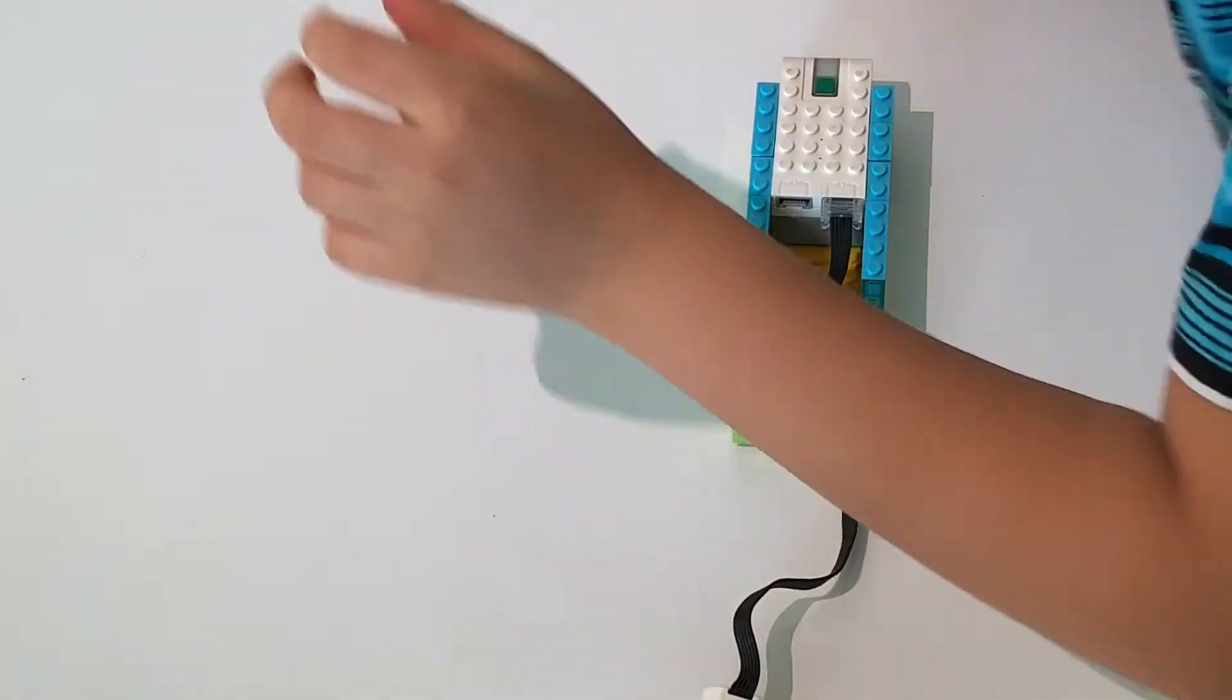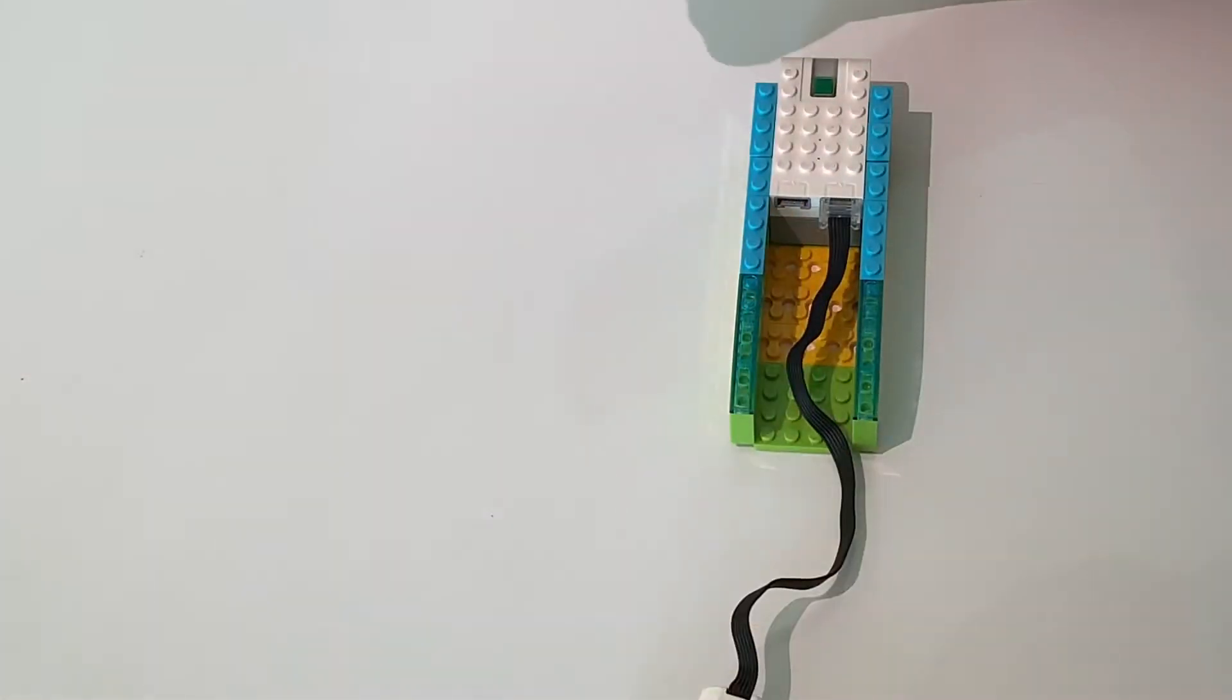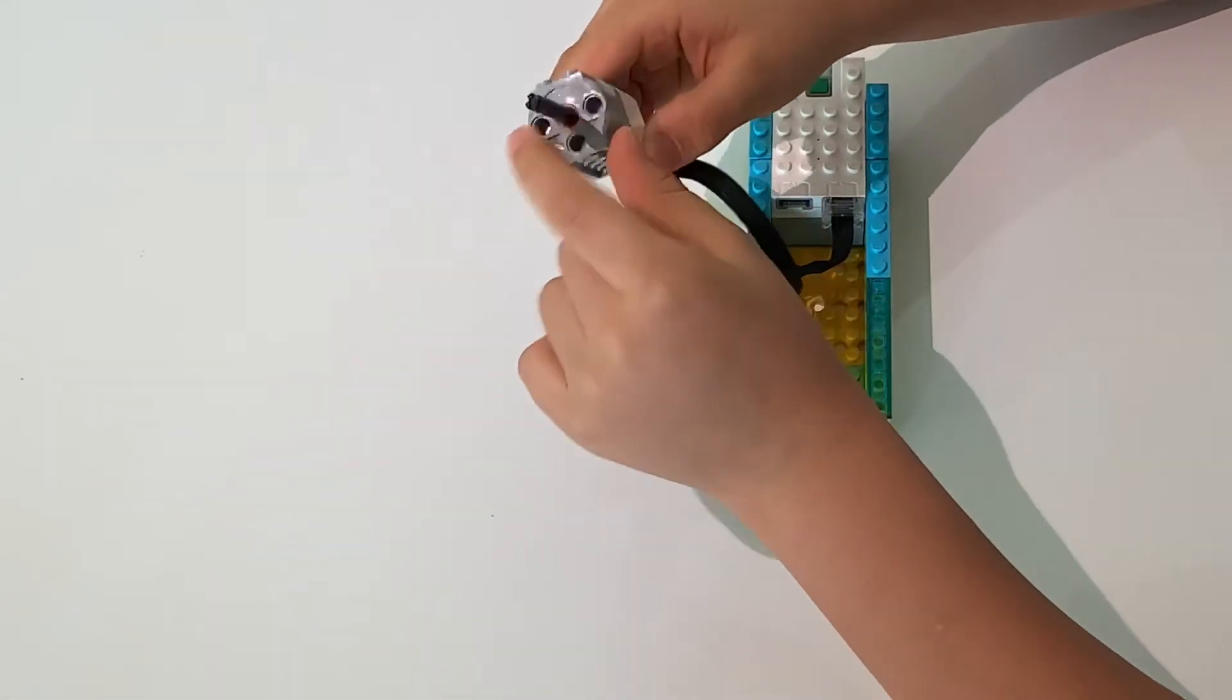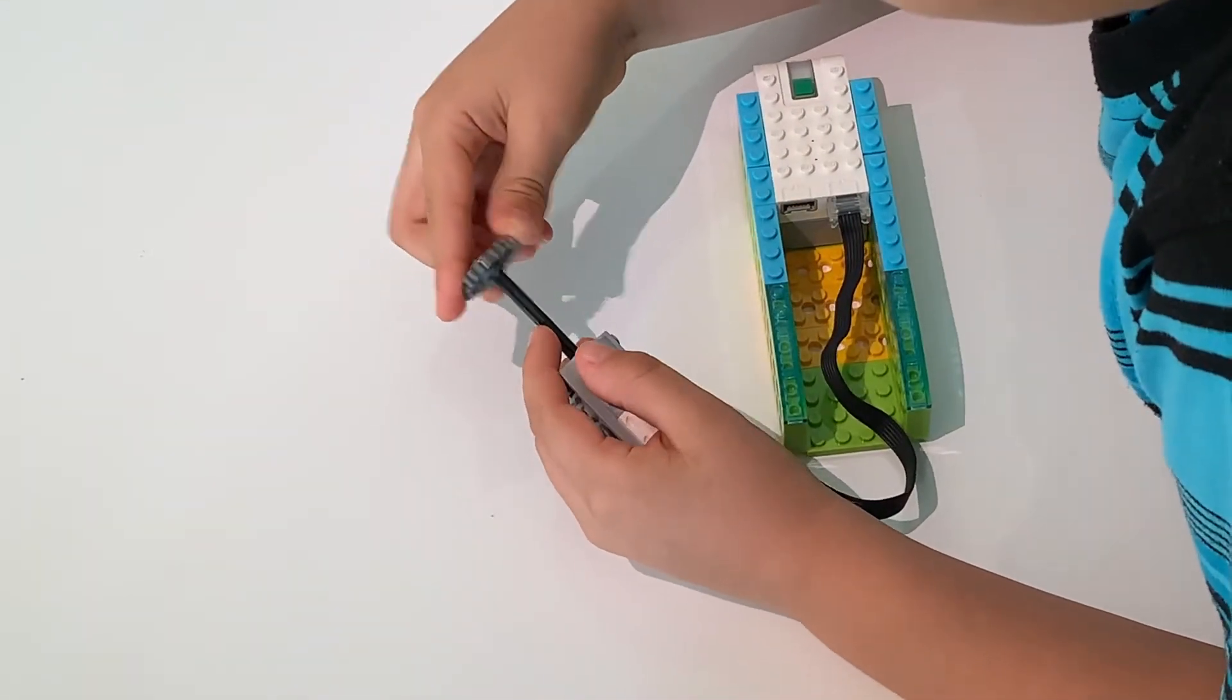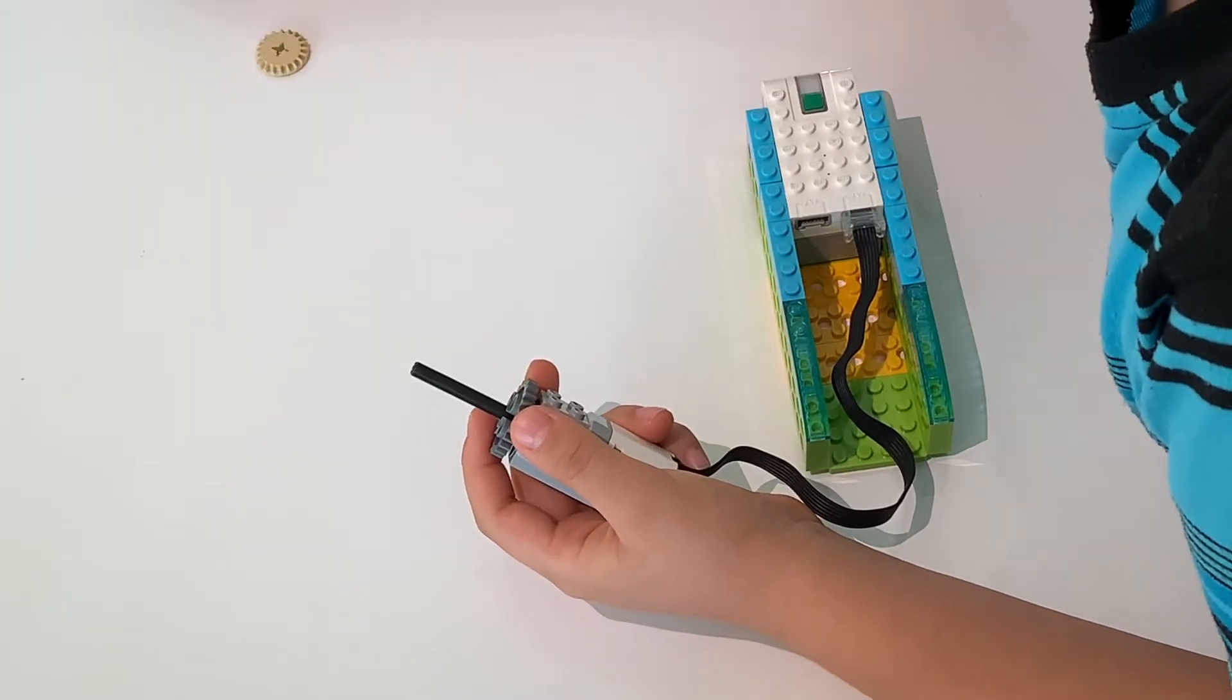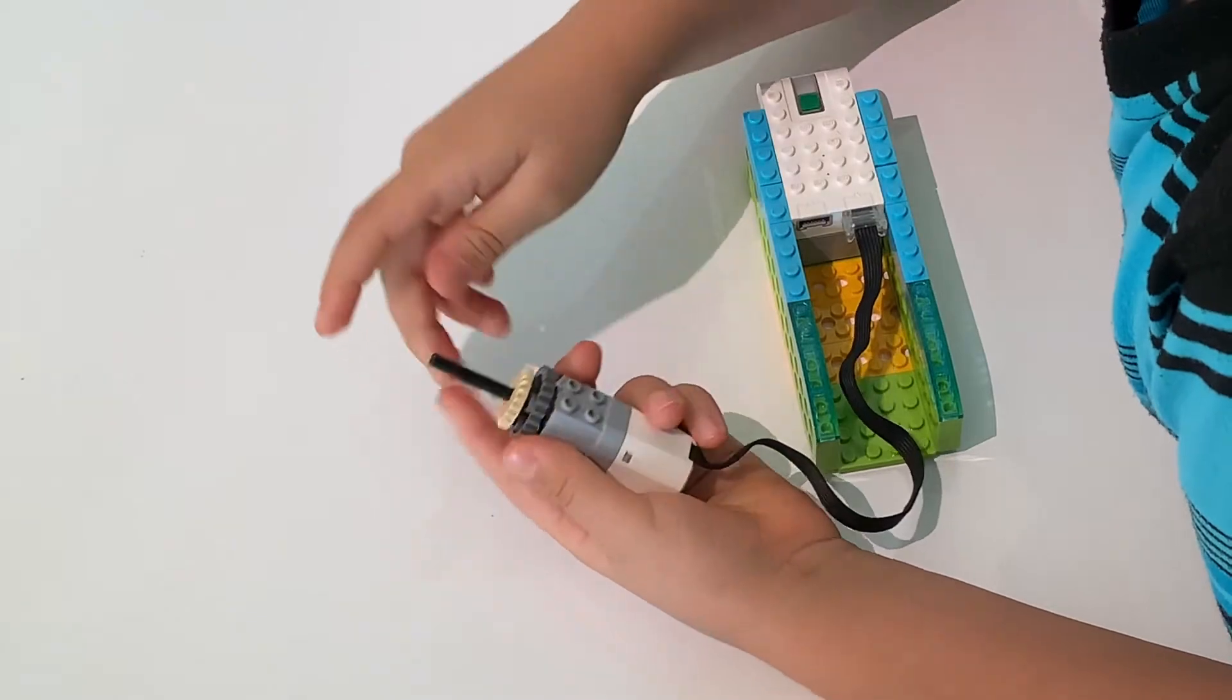Now, it's time to build the drill. Now, we'll get this black stick and insert it into the motor. Now, we'll get this big cog, which is gray, here. This smaller green cog, put it here.